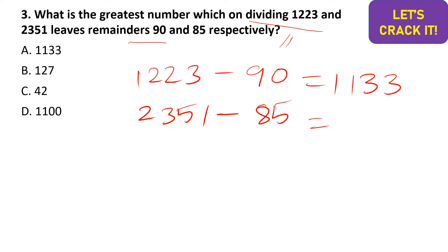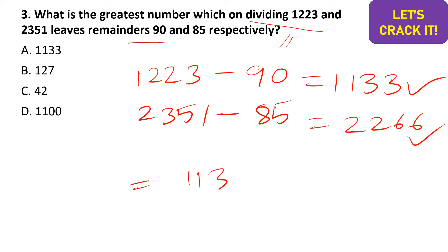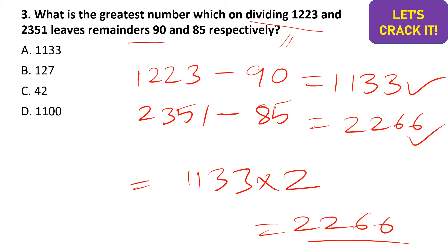Now we have two numbers: 1133 and 2266. Finding the HCF of these two numbers gives the answer. We can see that 1133 × 2 = 2266, so the HCF is 1133. Option A is the correct answer.